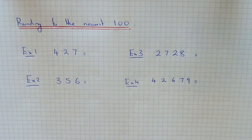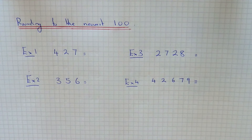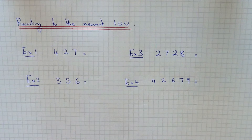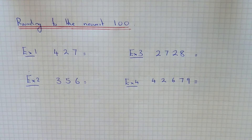Hi, today I'm going to show you four examples on how to round any number to the nearest hundred. So before you do this, think about exactly what you're doing here. If you're rounding to the nearest hundred, you're writing the number to the closest number in the hundred times table.